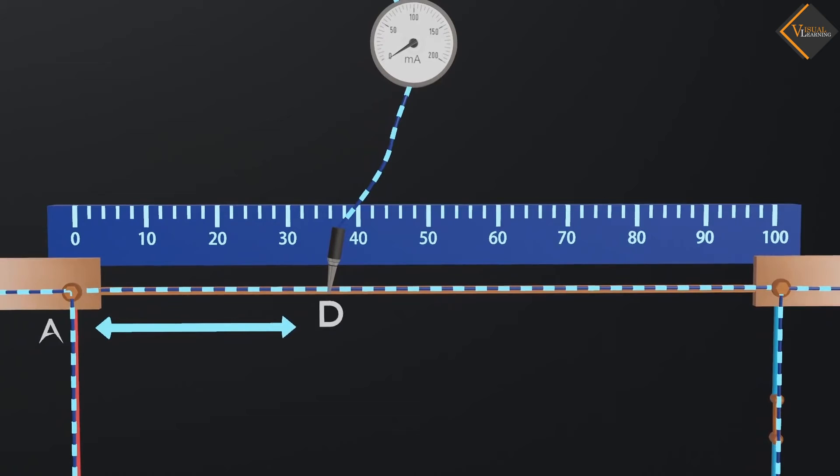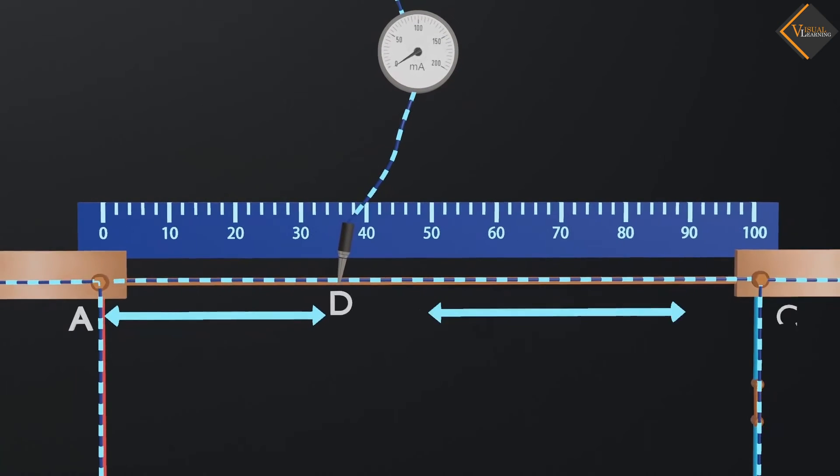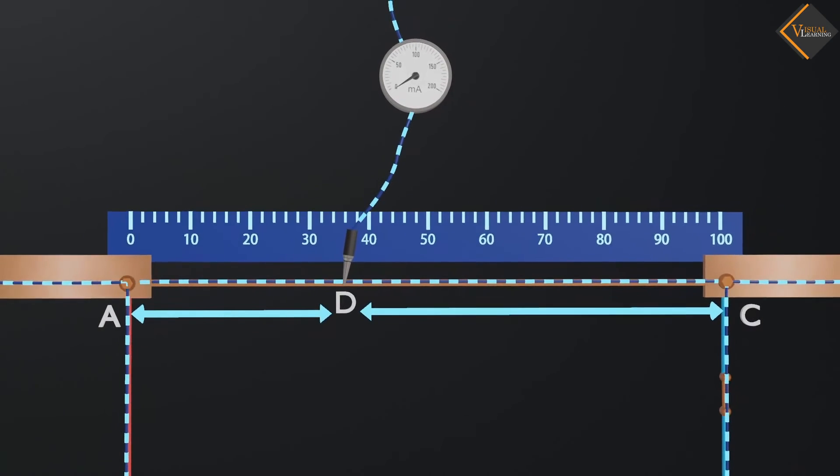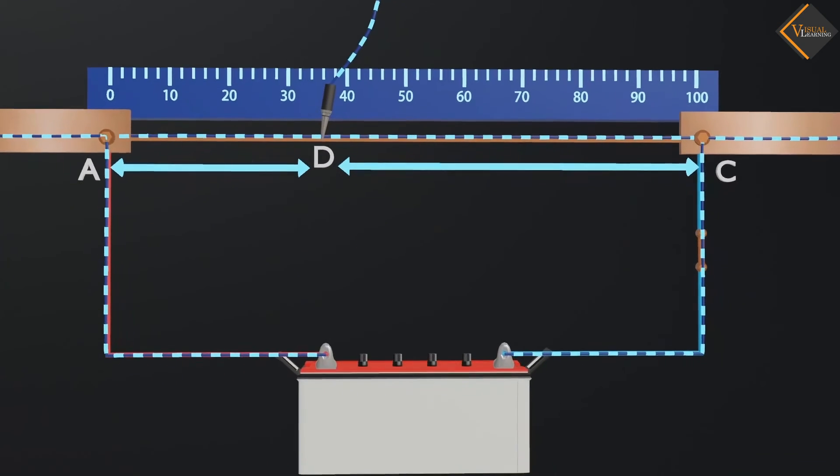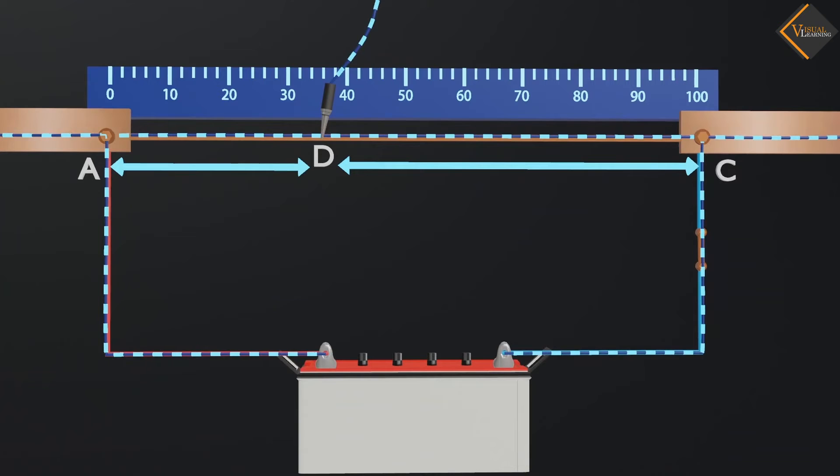From point D to point A, and from point D to point C, we will note the length of the wire. Let's assume that the length from point D to point A is L, and the length from point D to point C is 100 minus L.